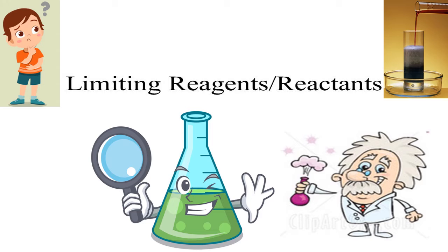In chemistry also, whenever two elements or two compounds are reacting, if both reactants are present as per the balanced chemical equation there is no problem. But if one reactant is in a lesser amount than required by the balanced chemical equation, that is called the limiting reagent or limiting reactant. It is used up completely, and the formation of product depends upon the limiting reactant.